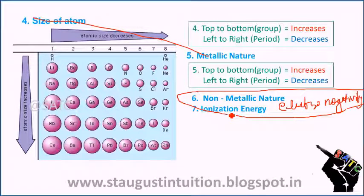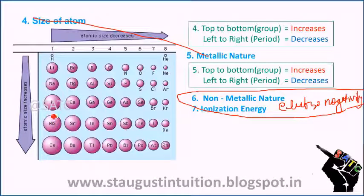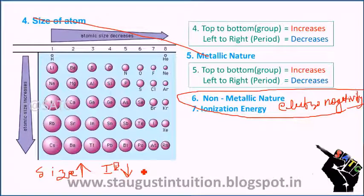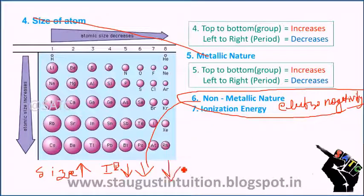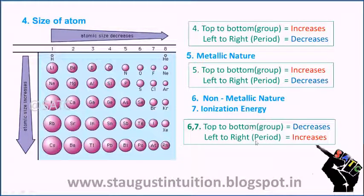What is ionization energy? It is the amount of energy required to remove an electron. Going down the group, ionization energy decreases because the size of the atom increases. If the size increases, the ionization energy will decrease. This also determines the non-metallic character and electronegativity, which follow the same trend.